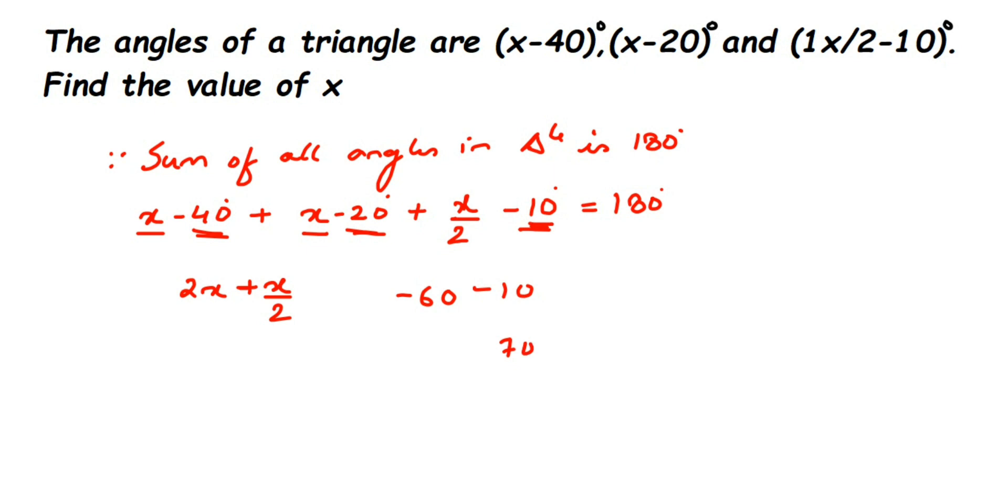When you add integers with the same sign, you do addition and keep the same sign. So -40, -20, -10 gives us -70. So we have 2x + x/2 - 70 = 180°. Now transpose -70 to the other side, so minus becomes plus.